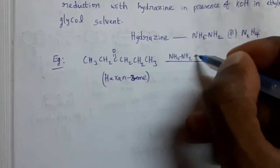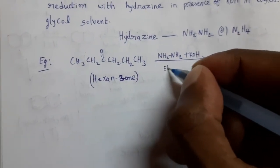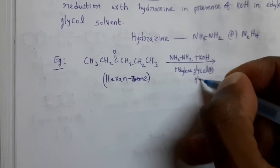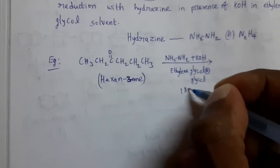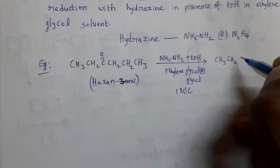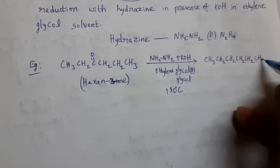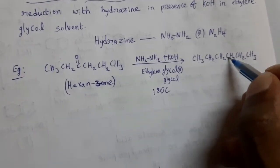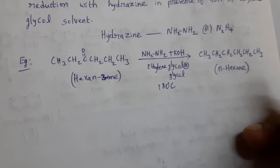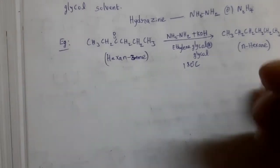This compound is treated with hydrazine (NH2NH2) in the presence of KOH in ethylene glycol solvent, also called glycol, at 180 degrees Celsius. Then we get the alkane CH3CH2CH2CH2CH2CH3 — counting six carbon atoms in the straight chain — that is n-hexane. In this way, ketones undergo Wolf-Kishner reduction to form alkanes.